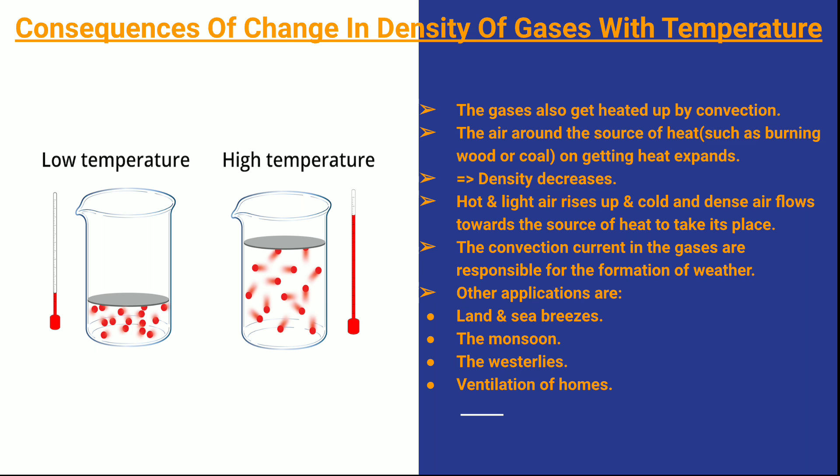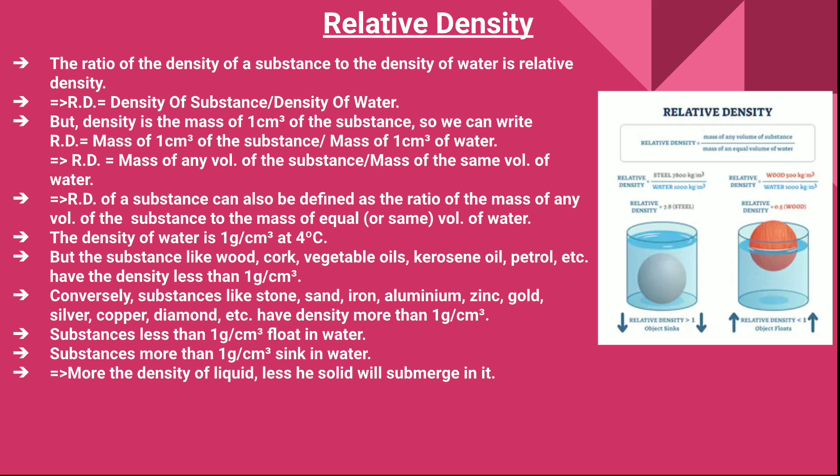This convection current in gases is responsible for the formation of weather. Other applications include land and sea breezes, the monsoon, the westerlies, and even the ventilation of houses — these are all examples of convection currents of air.